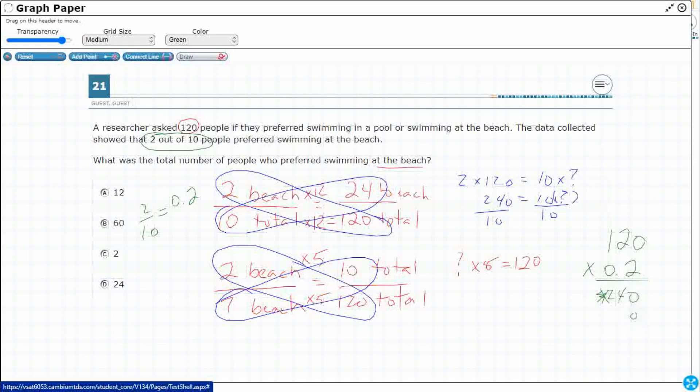And let's get 240 and zeros. So I'm going to get my 240, one digit behind the decimal. And I've got my 24.